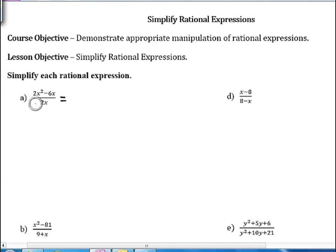Our first example here is 2x squared minus 6x over 2x. Before we can do any cancelling, we need to make sure that this numerator and the denominator are both written so that we have things being multiplied together. In the numerator here, we have two terms, but it's subtraction, so we need to see if we can factor that numerator so that we can cancel something.